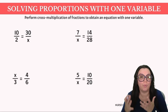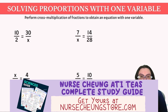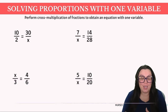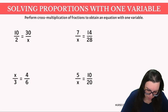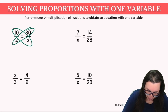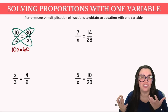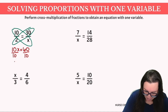Next up we're going to solve proportions with one variable. You're going to see two fractions with an equal sign between them, and you're going to have to solve for whatever the variable is. We're going to cross multiply fractions to obtain an equation with one variable. Our first problem gives us 10x equals 60. Now we just need to solve for x by dividing each side by 10, giving us x equals 6.